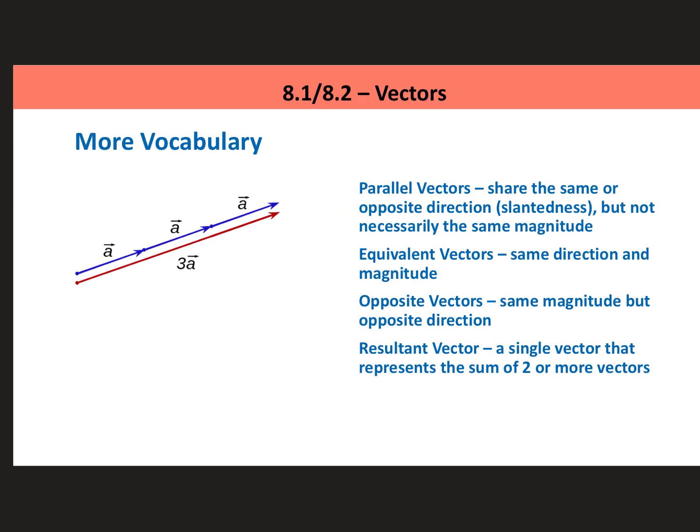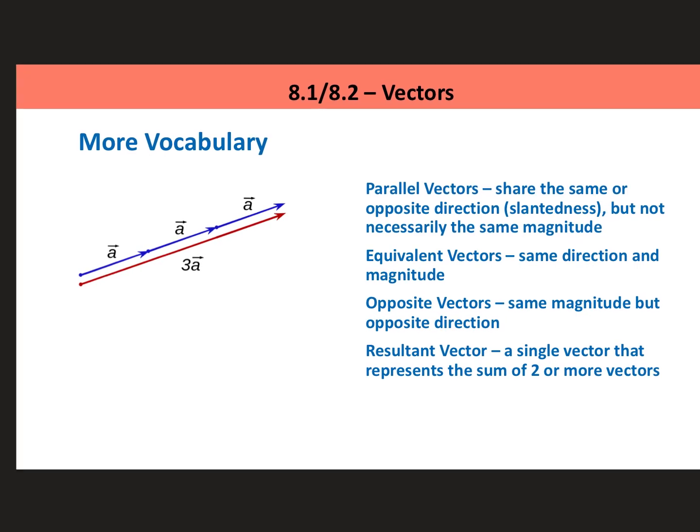A little more vocabulary. We can compare and do math with vectors. We can add them up and do various operations with them. We have to have a way of comparing them. Two parallel vectors are vectors that share the same or opposite direction. The direction is like the slantedness, how they're slanted.